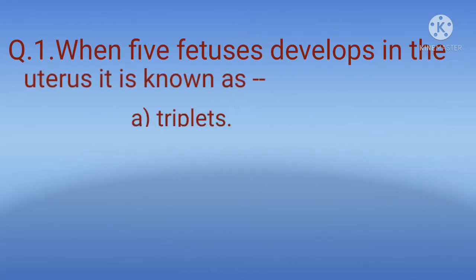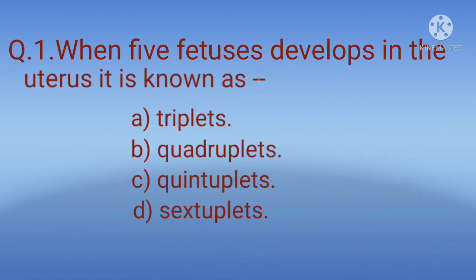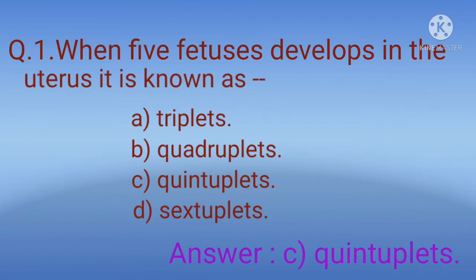Hello, welcome back. Today we are going to discuss MCQs on multiple pregnancies. Question 1: When five fetuses develop in the uterus, it is known as? Options: A) Triplets, B) Quadruplets, C) Quintuplets, D) Sextuplets. The correct option is C, quintuplets.